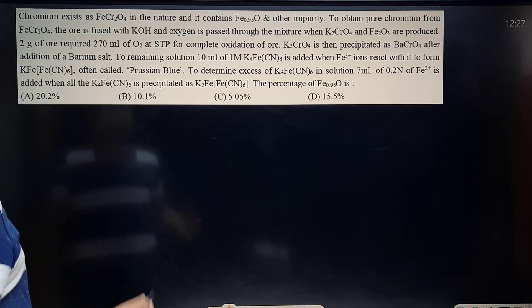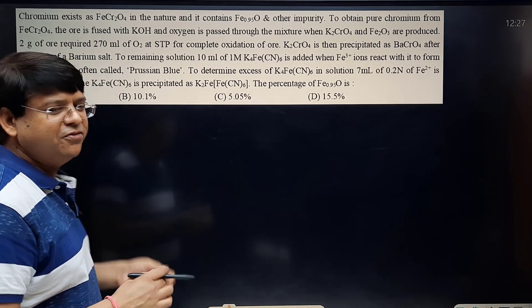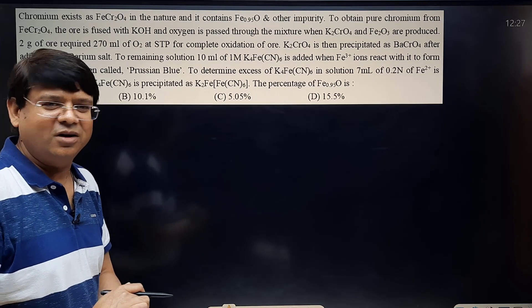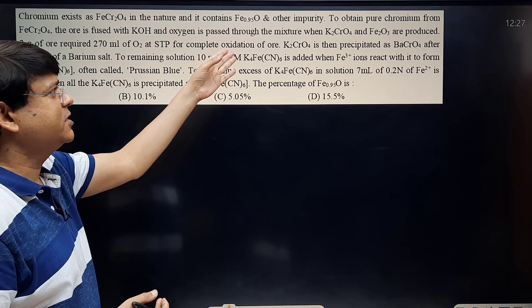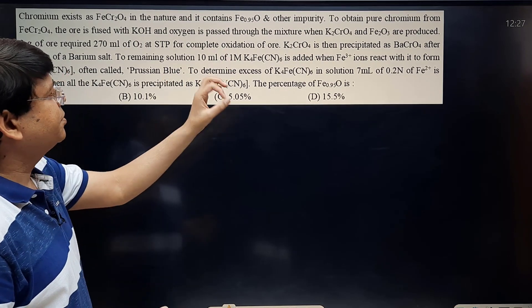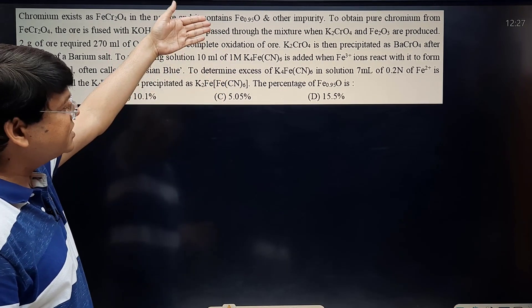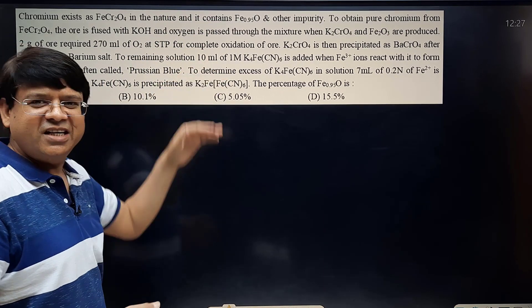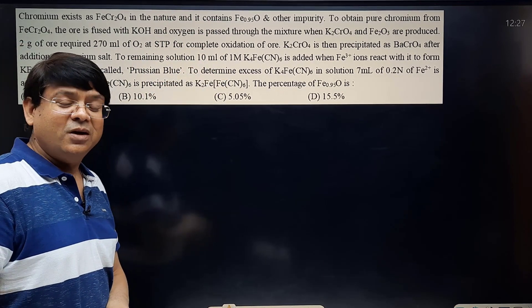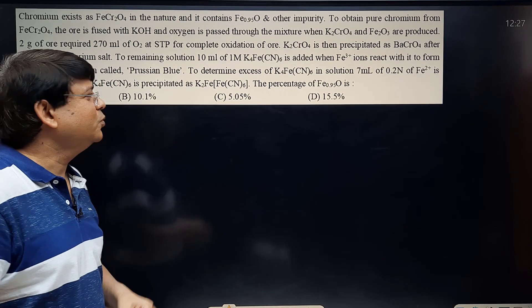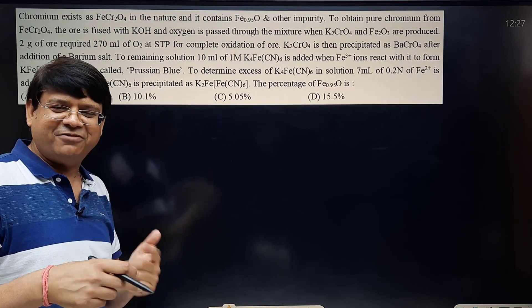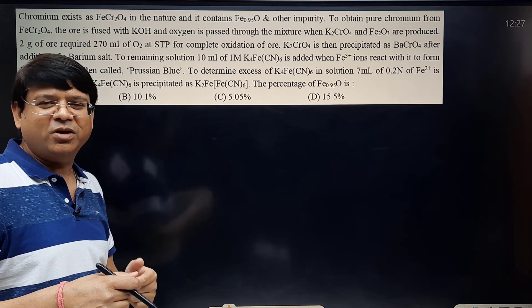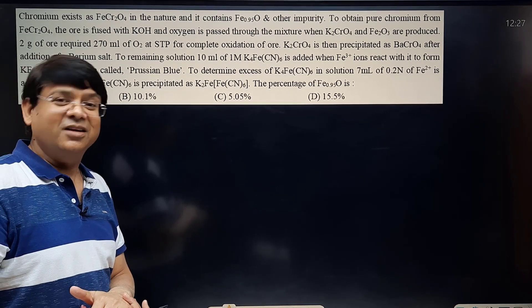Let us take up this question now. The question says chromium exists as FeCr2O4, which is a chief ore of chromium called chromite ore, and contains the impurity Fe0.945O. This is a longer question with multiple reactions. In such questions, you can draw the question in the form of a flow diagram so it would be easy to understand what kind of titrations are given and you can form the equations and solve.